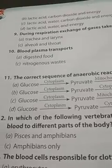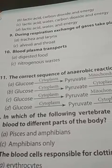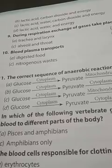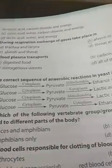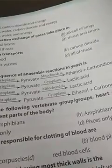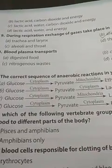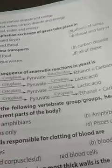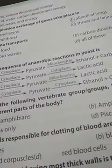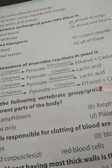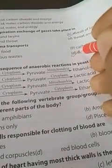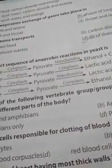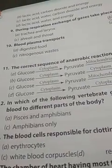Question number 10: blood plasma transports — carbon dioxide, nitrogenous waste, digested foods, or all of them? The answer is all of them. All of these get transported by the blood plasma.